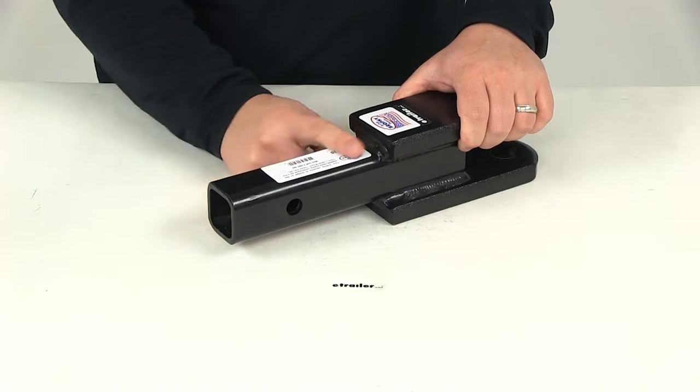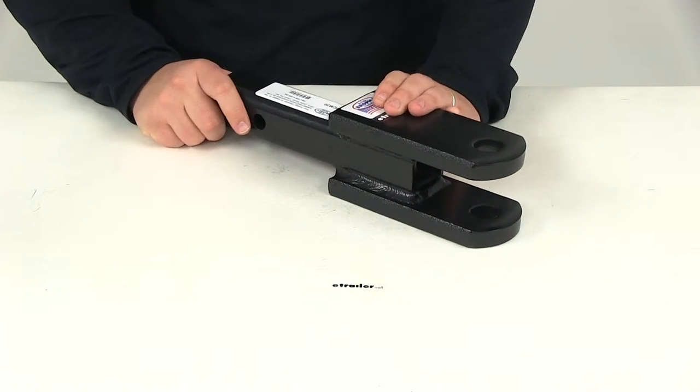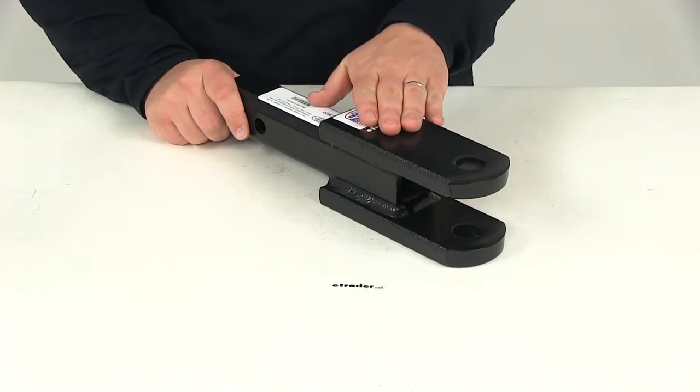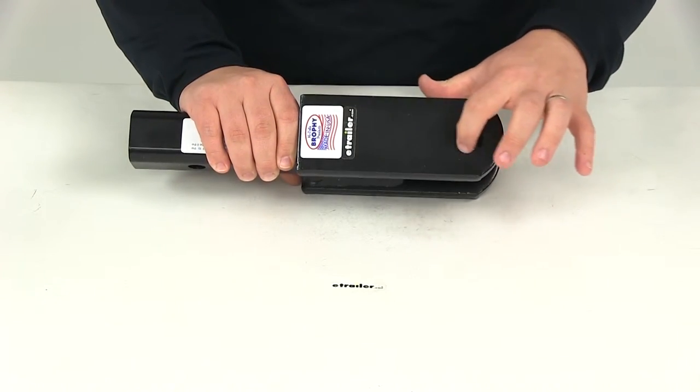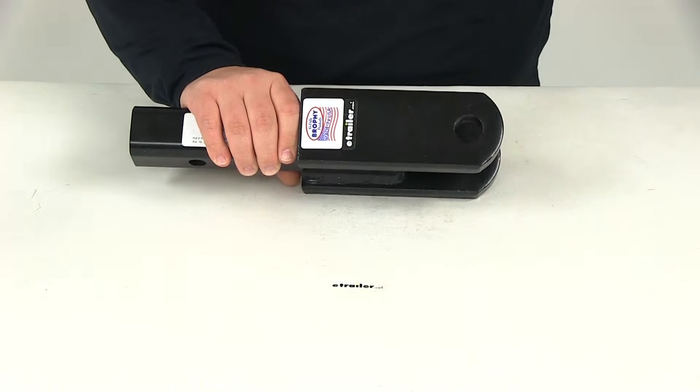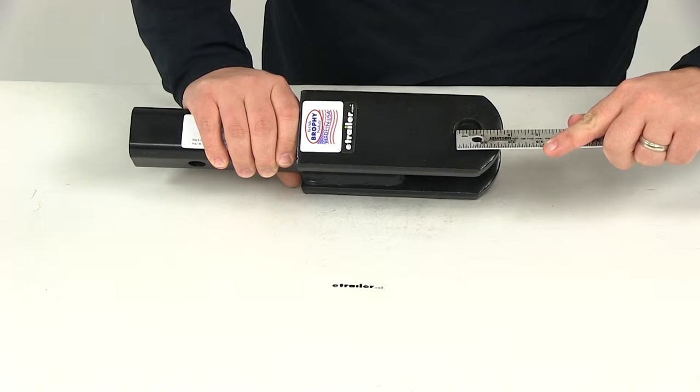It's designed for two-inch by two-inch trailer hitch receivers. It's going to offer a maximum gross trailer weight of 6,000 pounds with a maximum tongue weight of 600 pounds. The ball hole right here, or your pinhole diameter, is going to give us a measurement of right on one inch.